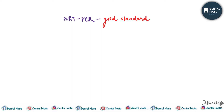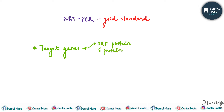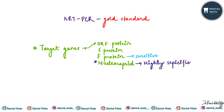RT-PCR, the gold standard, is a real-time or quantitative RT-PCR test that gives results in one to two days. The target genes for the RT-PCR test are the ORF protein, the S or spike protein, the E or envelope protein, and the nucleocapsid. The S protein is quite sensitive and is also present in certain other viruses, whereas the nucleocapsid is a highly specific protein.